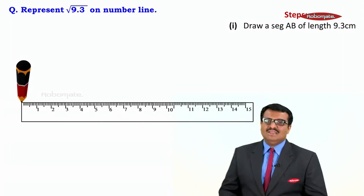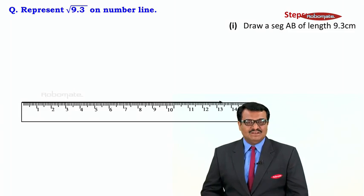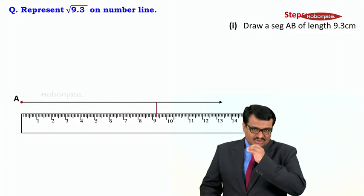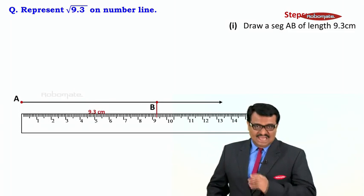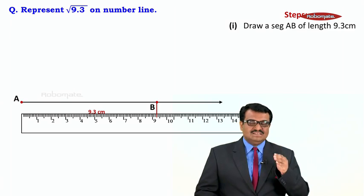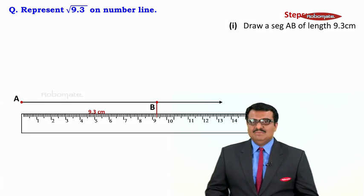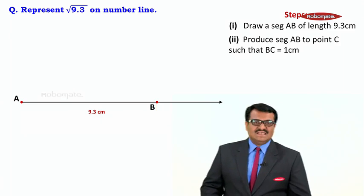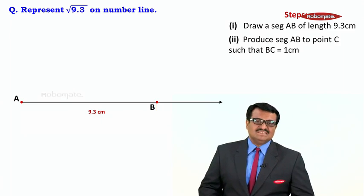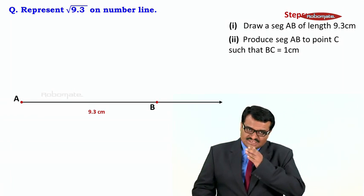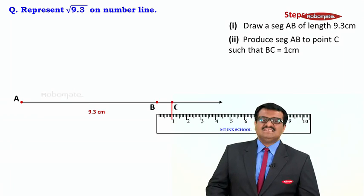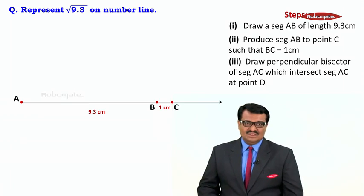Let us take a scale and draw AB of length 9.3 centimeters. We are using an arrow because it is a number line. Starting at A, we mark 9.3 centimeters and take point B. Then, second step: produce AB to point C such that BC is 1 centimeter.